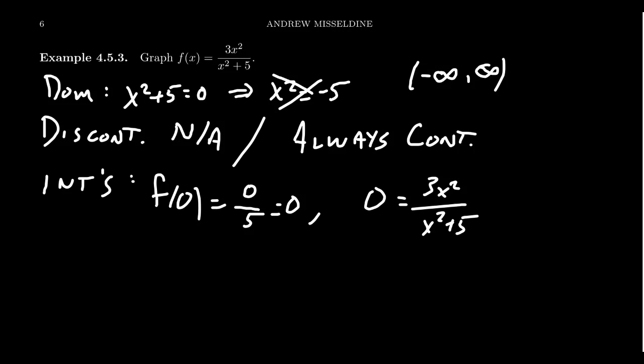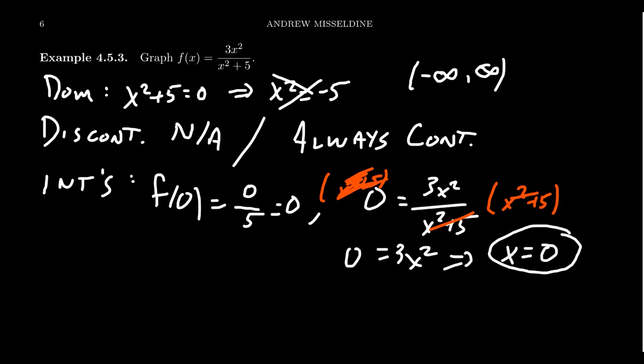You can multiply both sides of the equation by the denominator, x squared plus 5. If you times anything by 0, that'll just be 0. And on the right-hand side, they cancel. So, we end up with just 0 equals 3x squared, which will imply that x equals 0 itself. So, this is our x-intercept. It was also y-intercept. So, this function is going to go through the origin.